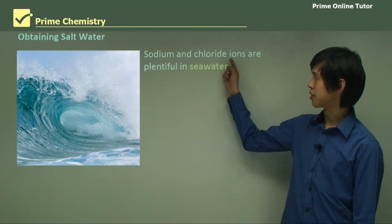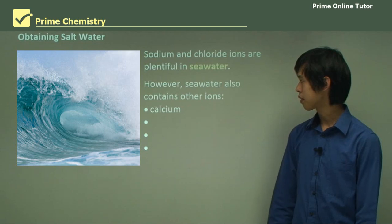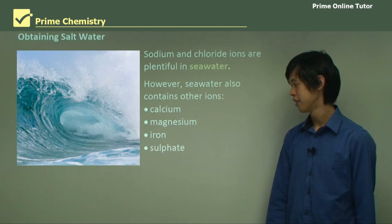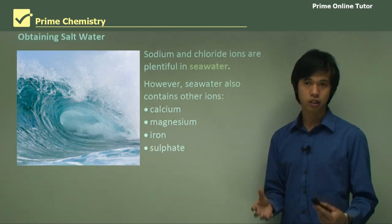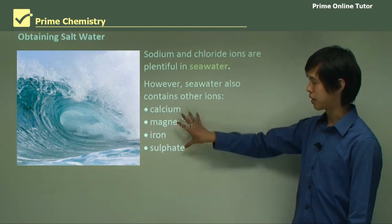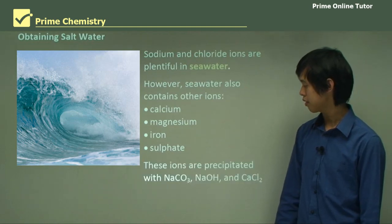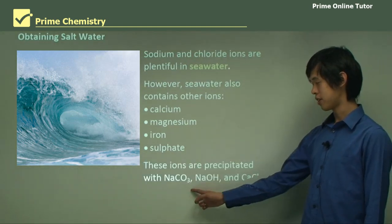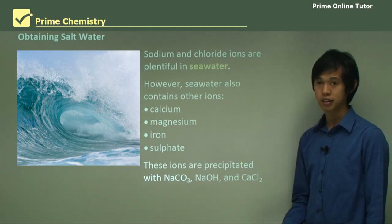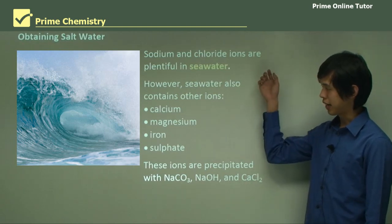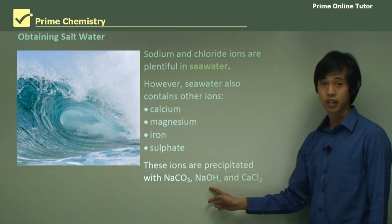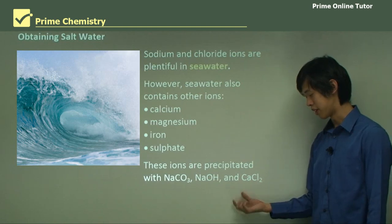Obtaining salt water: sodium and chloride ions are plentiful in seawater, but seawater also contains other ions like calcium, magnesium, iron, and sulfate. We want pure salt water at very high concentration without all of these extra ions. So we precipitate them out — sodium carbonate removes calcium and some magnesium, sodium hydroxide removes iron, and calcium chloride removes the sulfate.